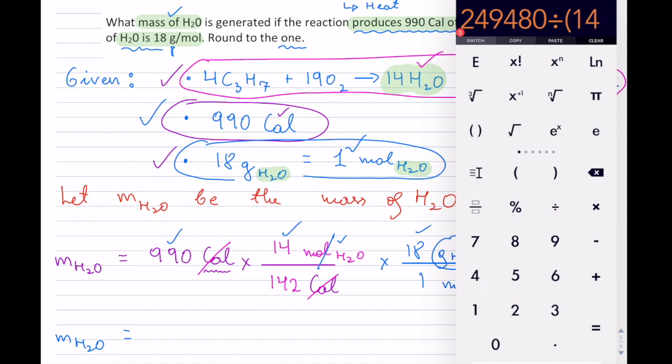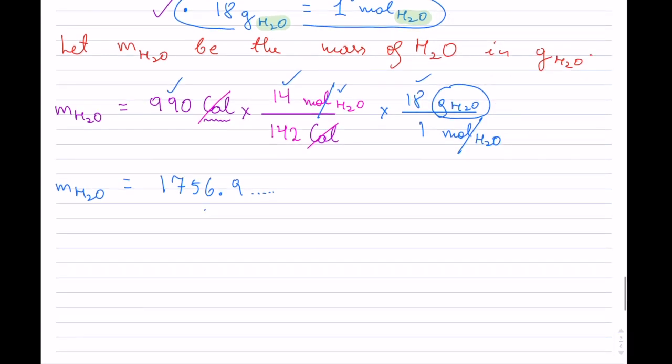Then I have to divide by all the numbers at the bottom, so 142 times 1, close the bracket, equals. I get 1756.9 and so on.